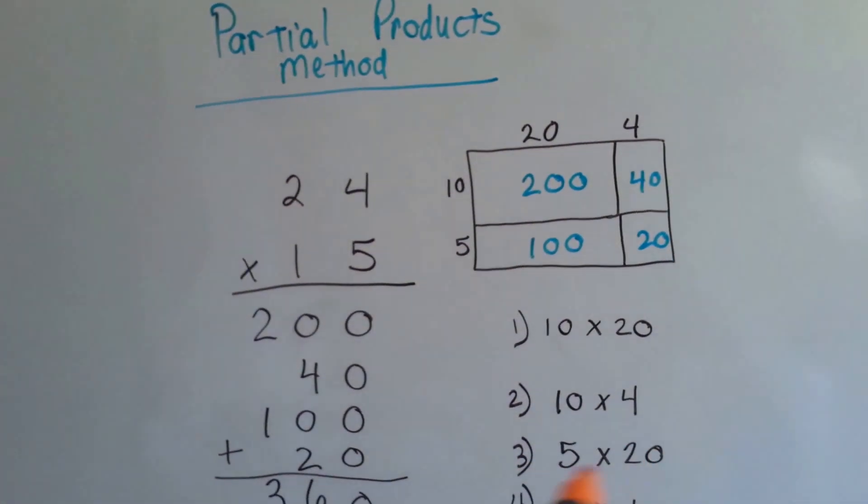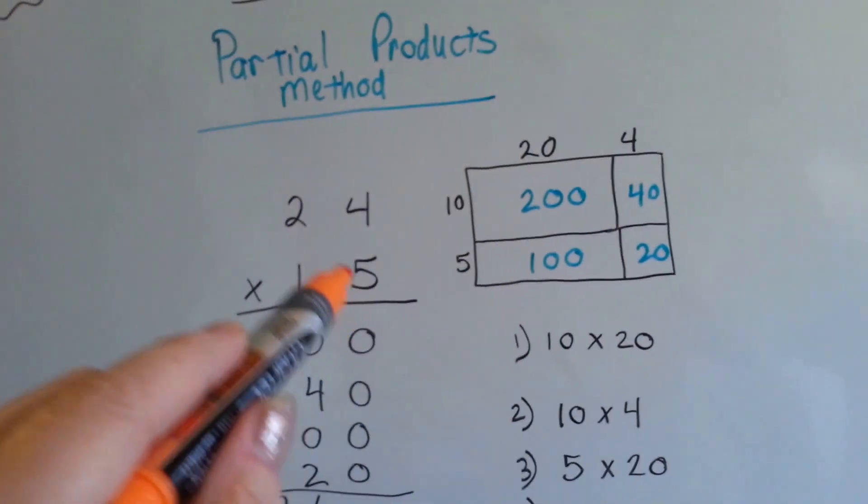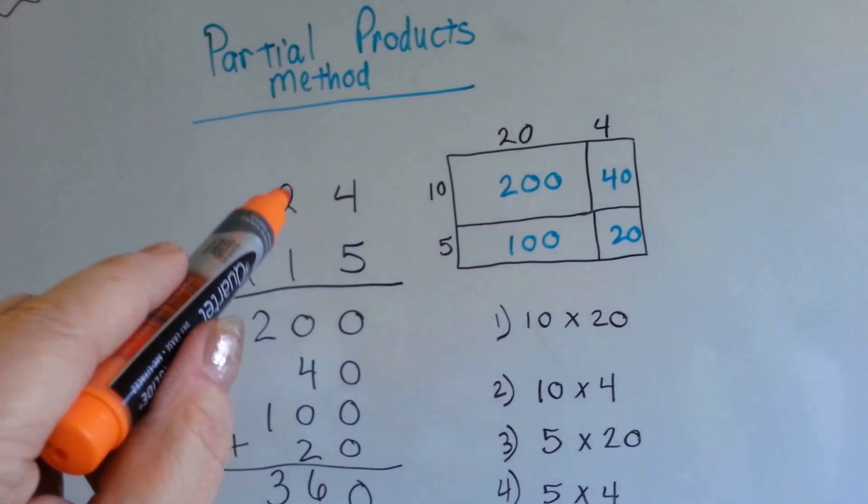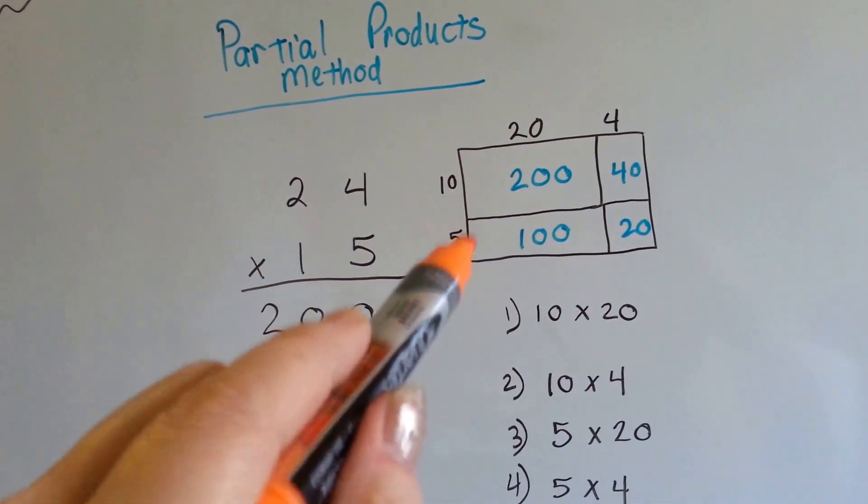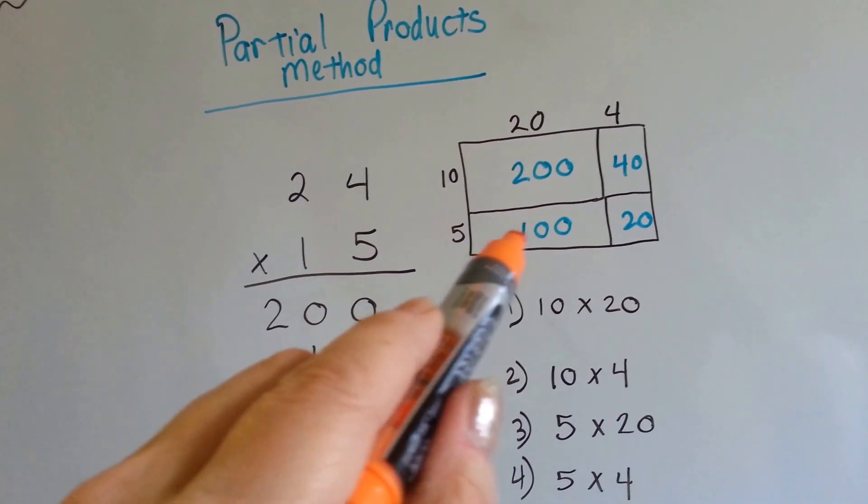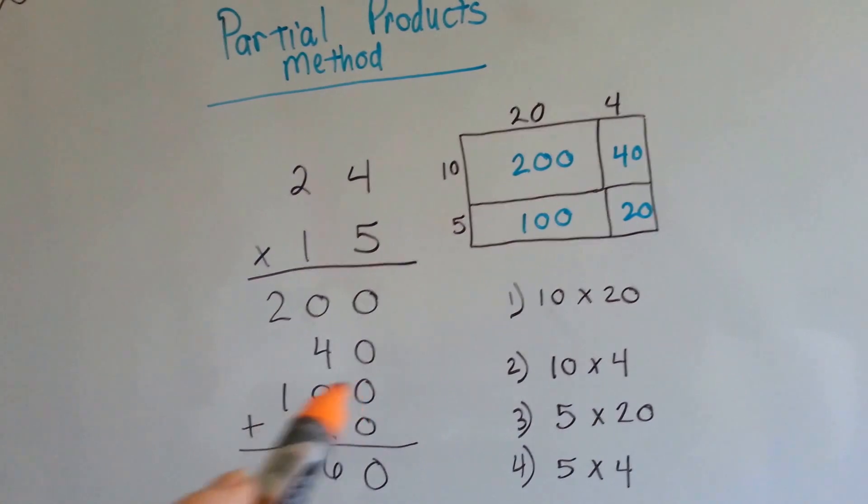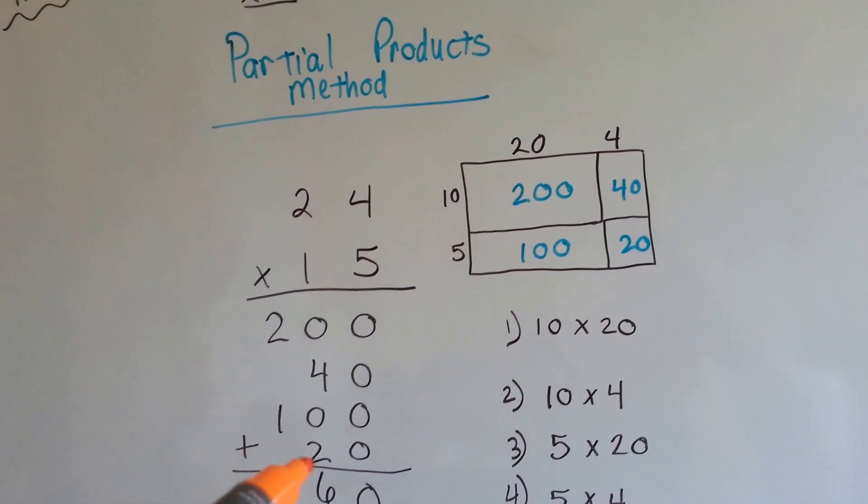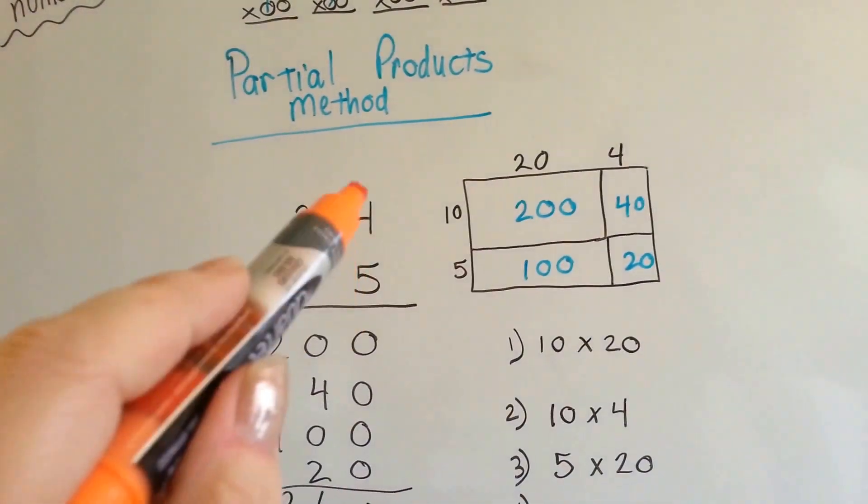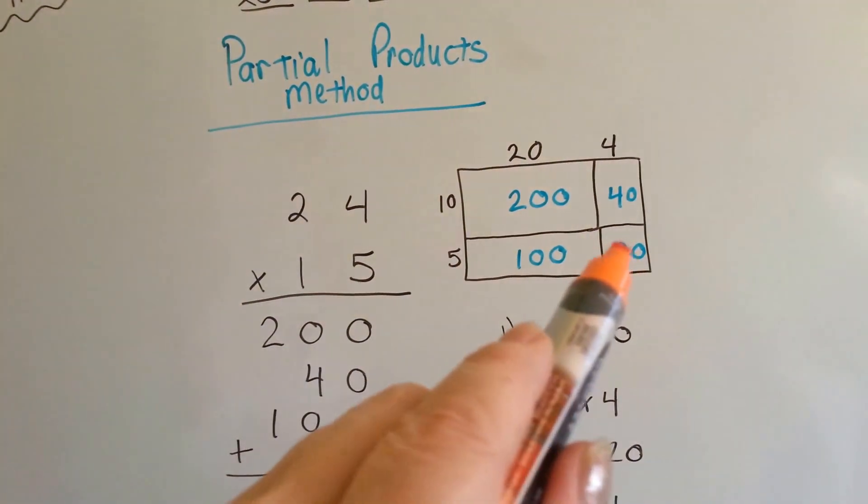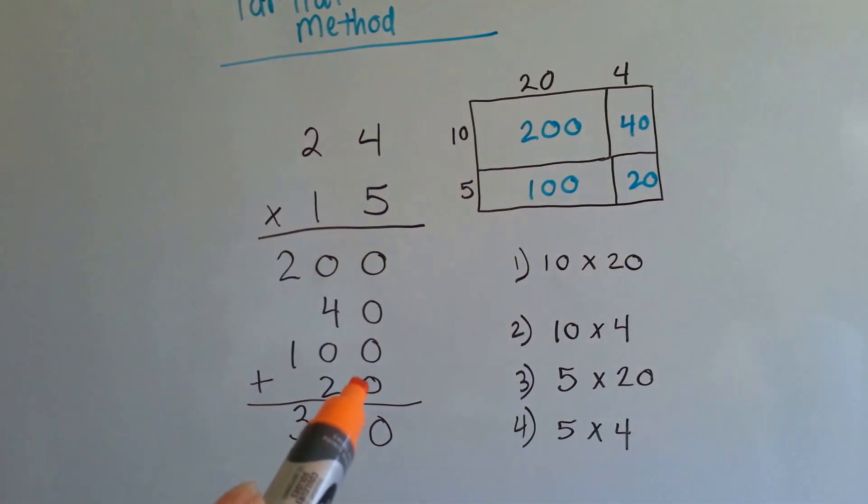Now we're going to do the 5 times 20. The 5 times this 2, this 2 is really a 20, isn't it? 24. So 5 times 20 is 100 right here. We write our 100, and then the last thing we're going to do is the ones place, the 5 times the 4, that's down here in this corner. 5 times 4 is 20.